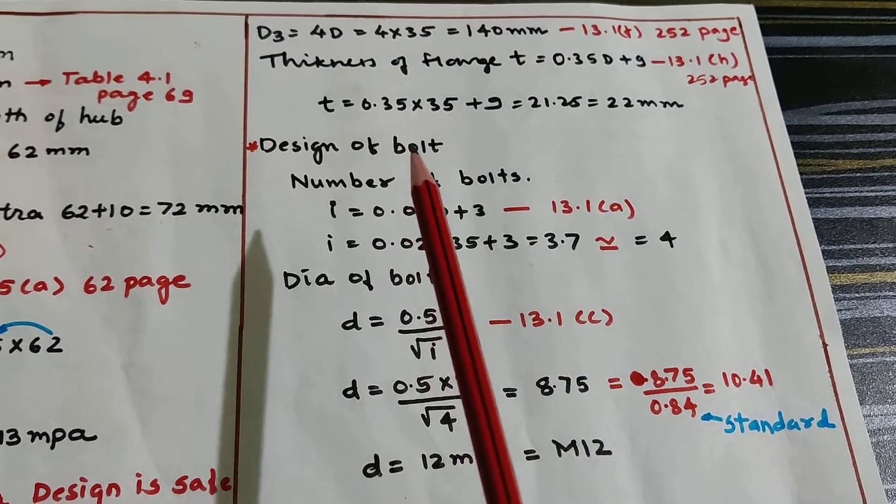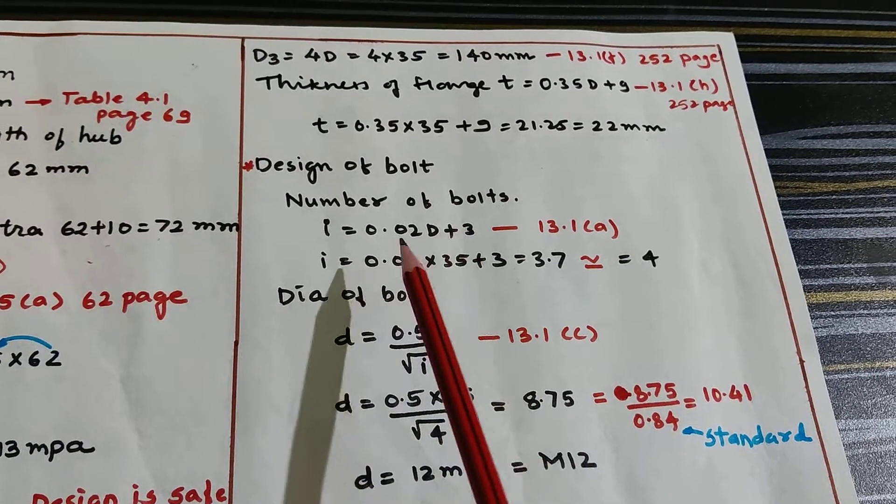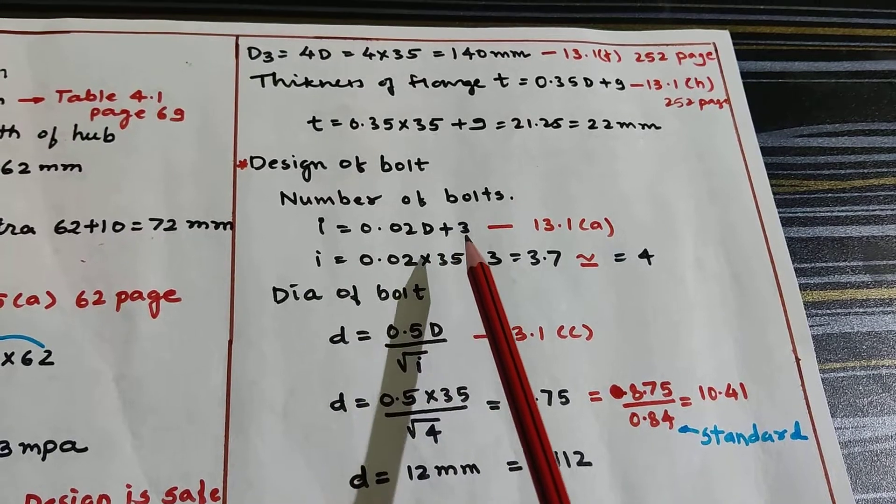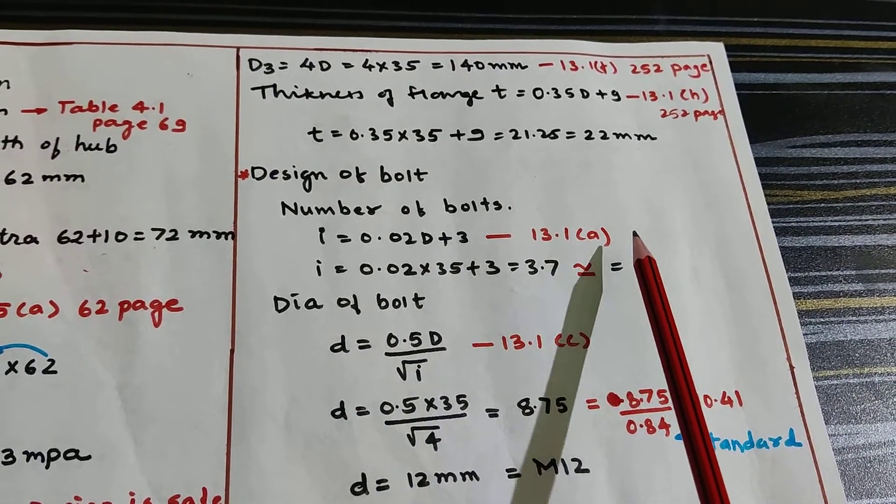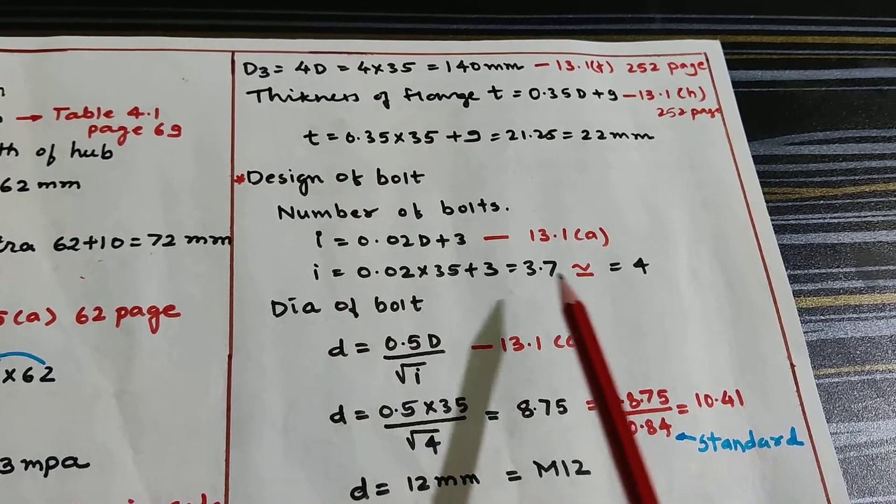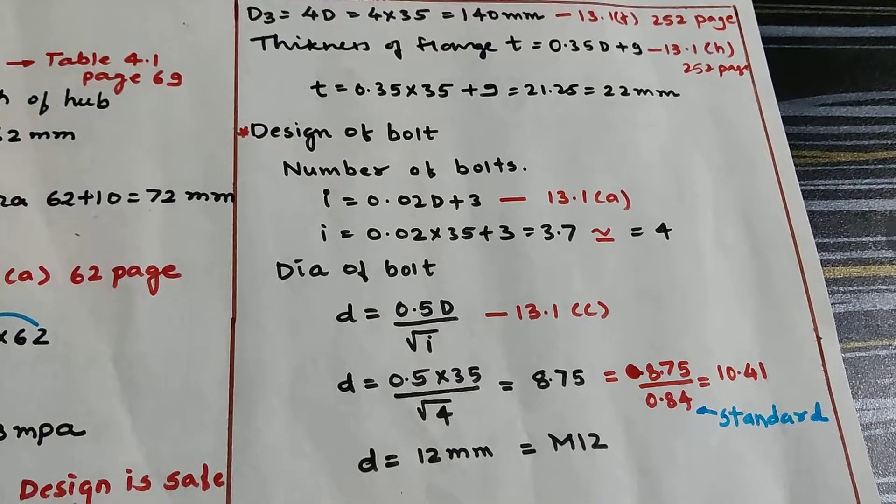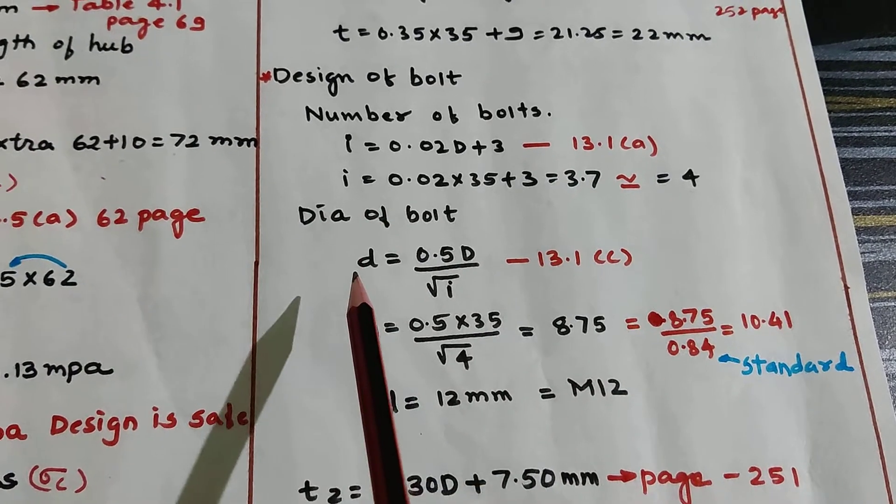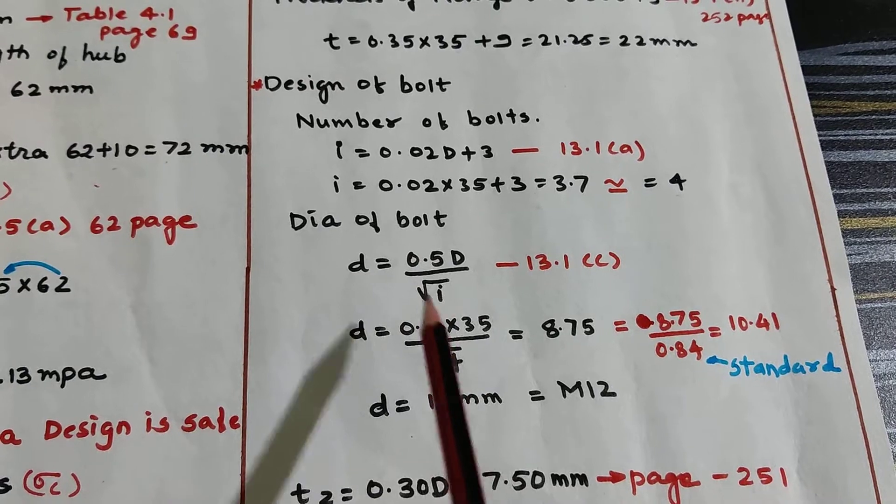Next is design of bolt. The number of bolts required: I = 0.02D + 3, equation 13.1I on page 251. For this I got 3.7. I will round it off to 4, so required number of bolts are 4.